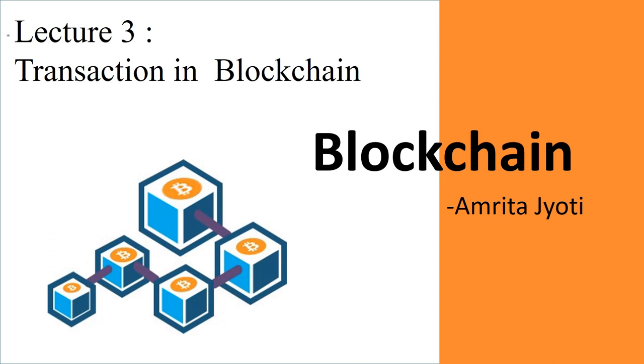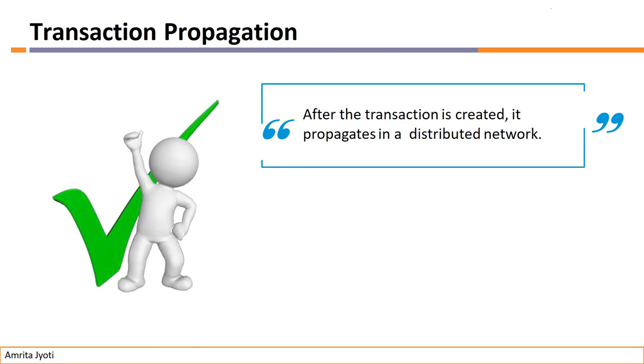Hi, this is Amrita. Welcome all to the next lecture of the blockchain course. Today we will discuss all about transactions in the blockchain. In order for a block to be added to the blockchain, four things must happen: first, a transaction must occur; next, that transaction must be verified; then that transaction must be stored in a block; and finally, that block must be given a hash.